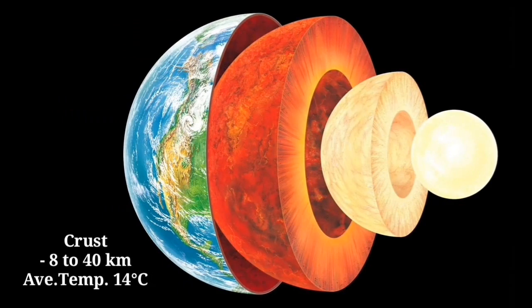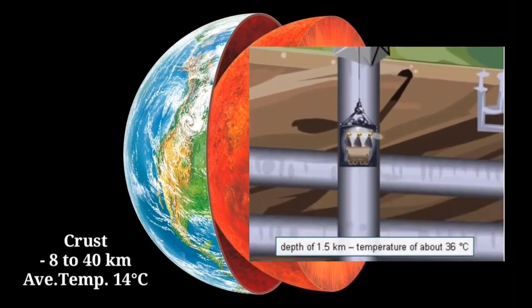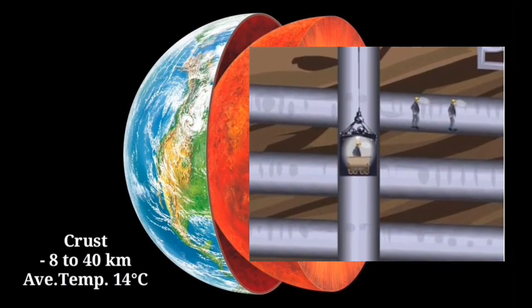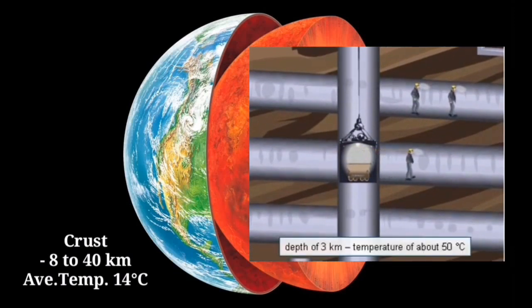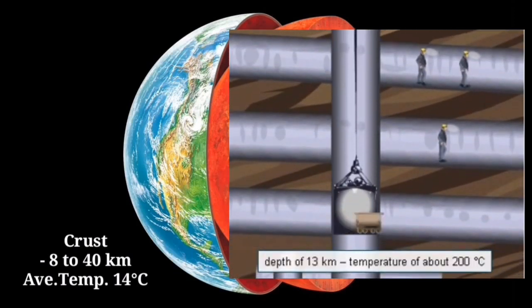The Earth's crust has an average thickness of 8 to 40 kilometers with an average temperature of 14 degrees Celsius. This temperature varies — for example, in a coal mine situated at a depth of 1.5 kilometers, the temperature is about 36 degrees Celsius. In some South African mines, the temperature at a depth of 3 kilometers is 50 degrees Celsius, and at certain depths it is as high as 200 degrees Celsius.